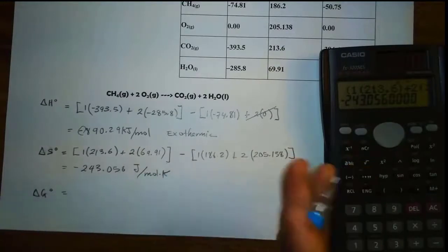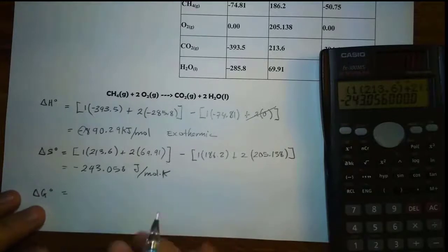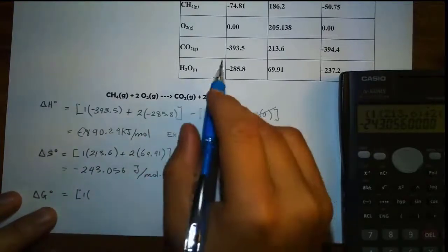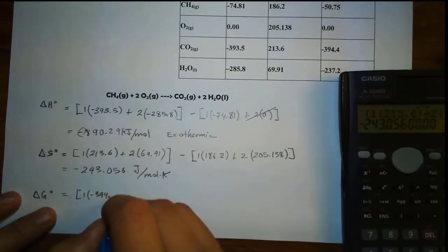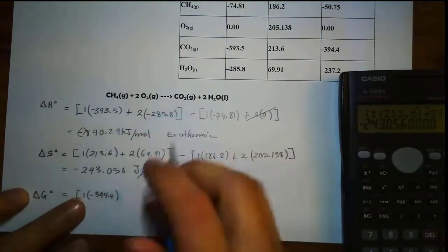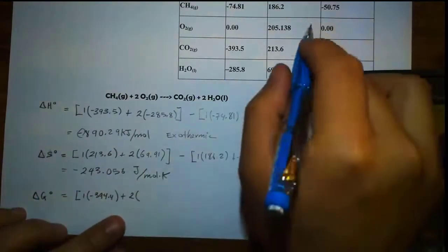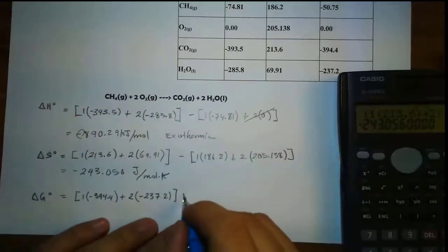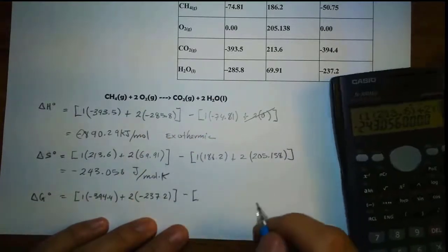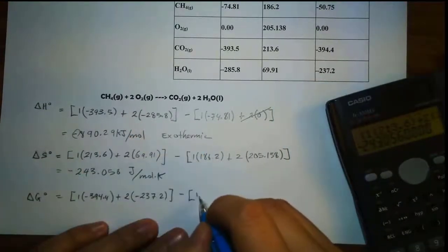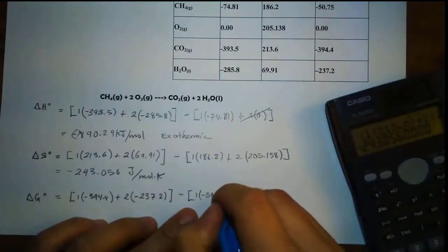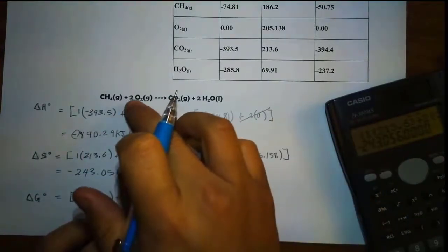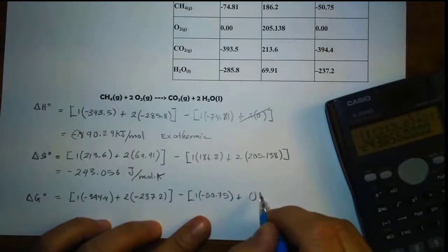Now let's solve for delta G naught. Same thing — product minus reactant, sum of product minus sum of reactant. We have one mole of carbon dioxide; the value for CO2 for delta G is negative 394. And water — two moles, so times 2. The value for water is negative 237.2. We close the product side. For the reactant side, we have one mole of methane, value negative 50.75. And two moles of oxygen — I know right away it is zero because it's an element. We can ignore that.